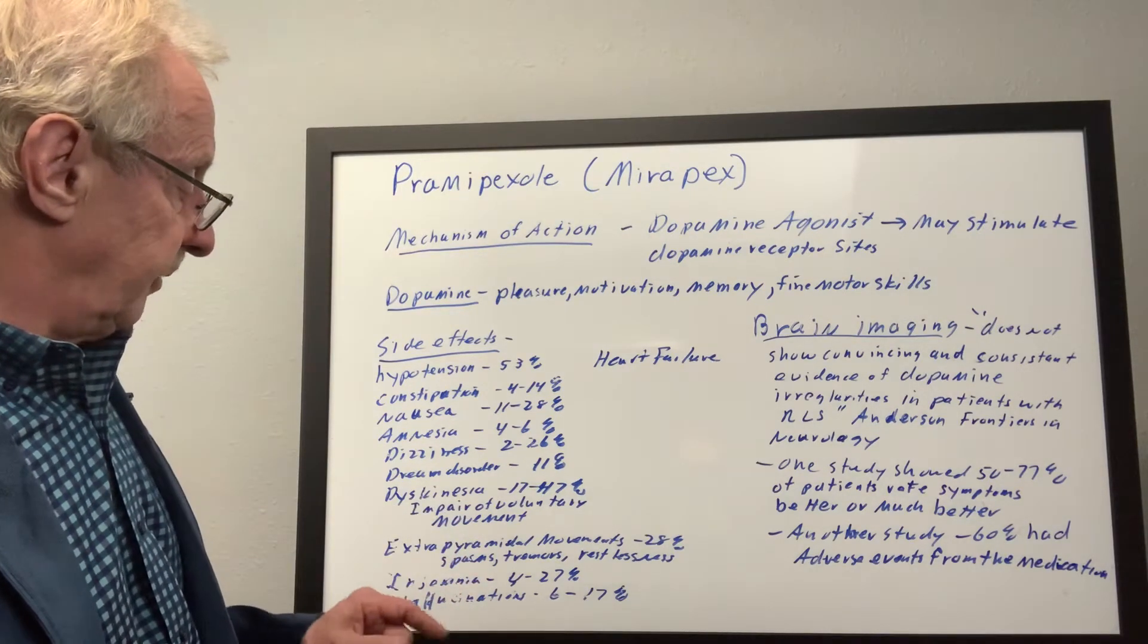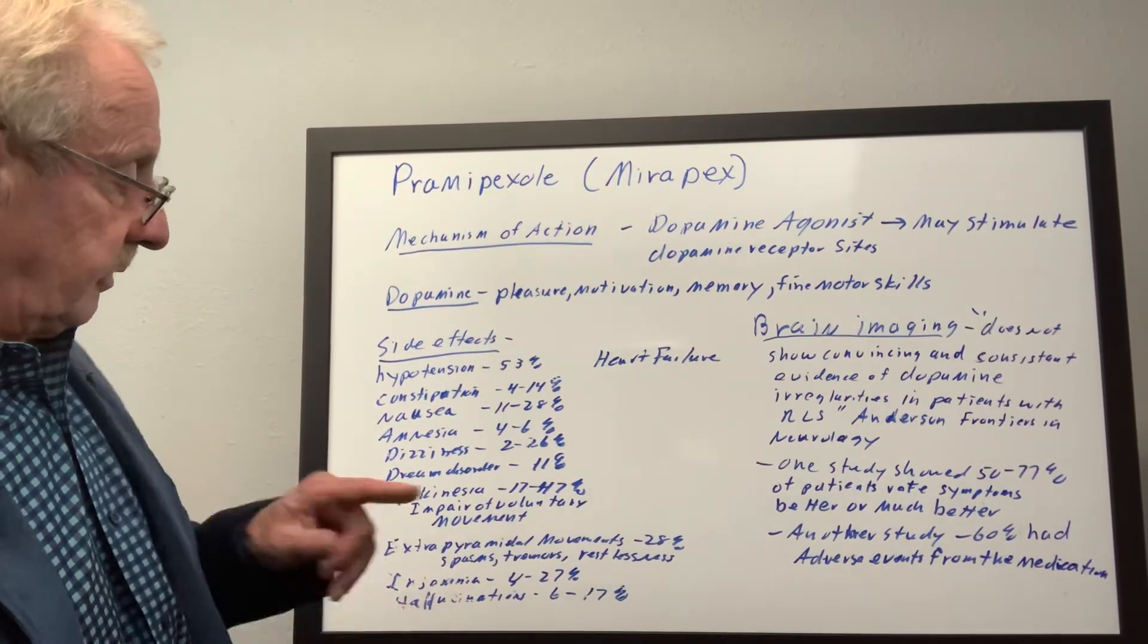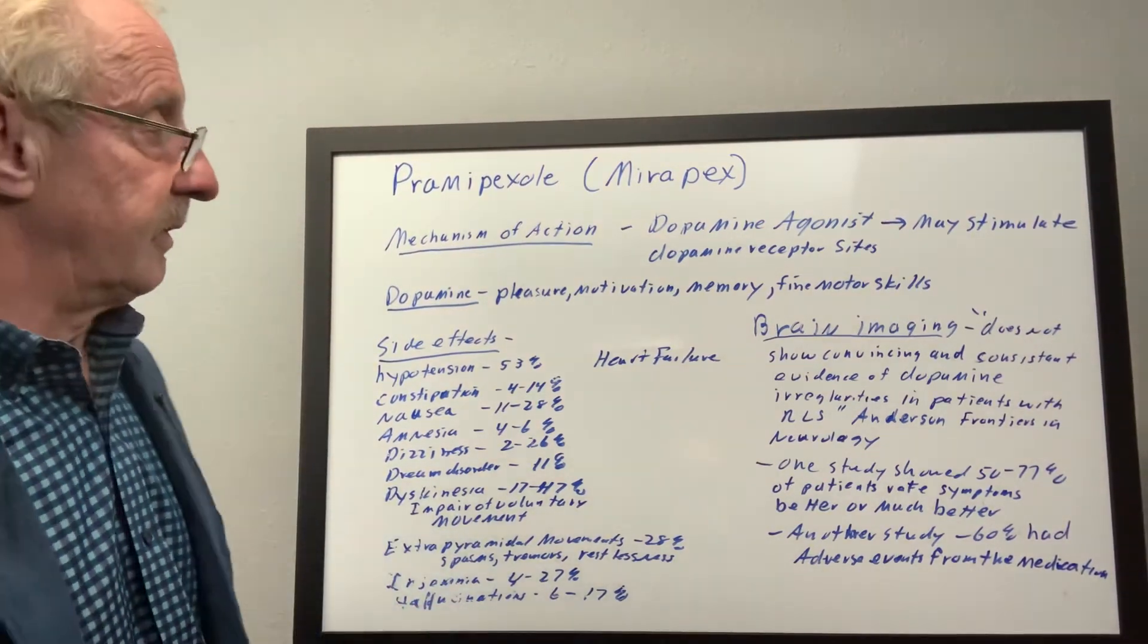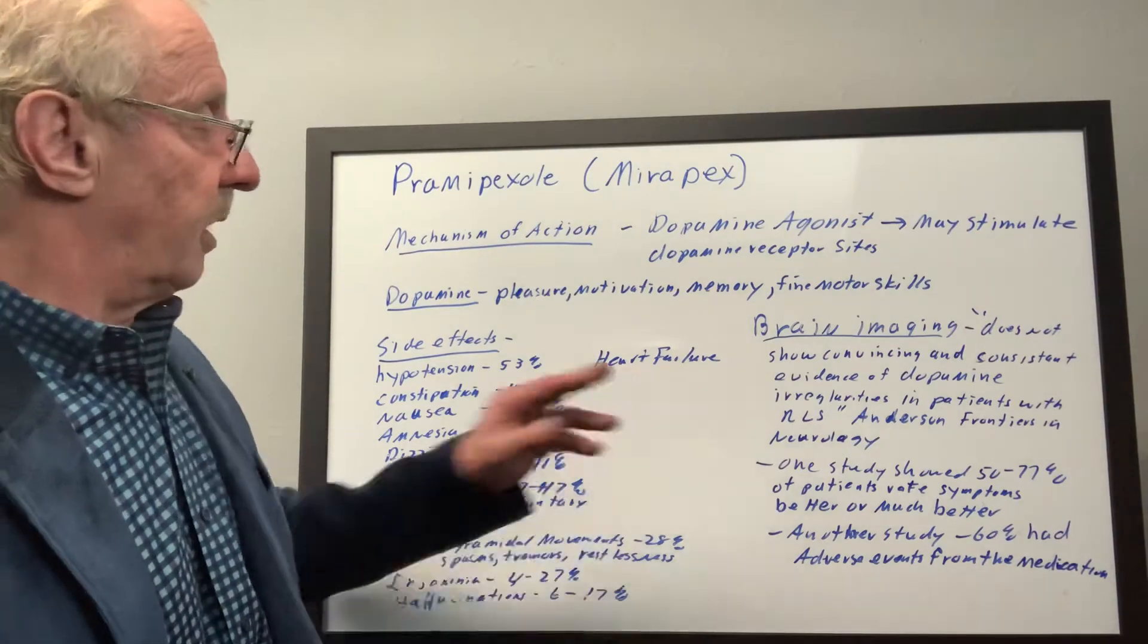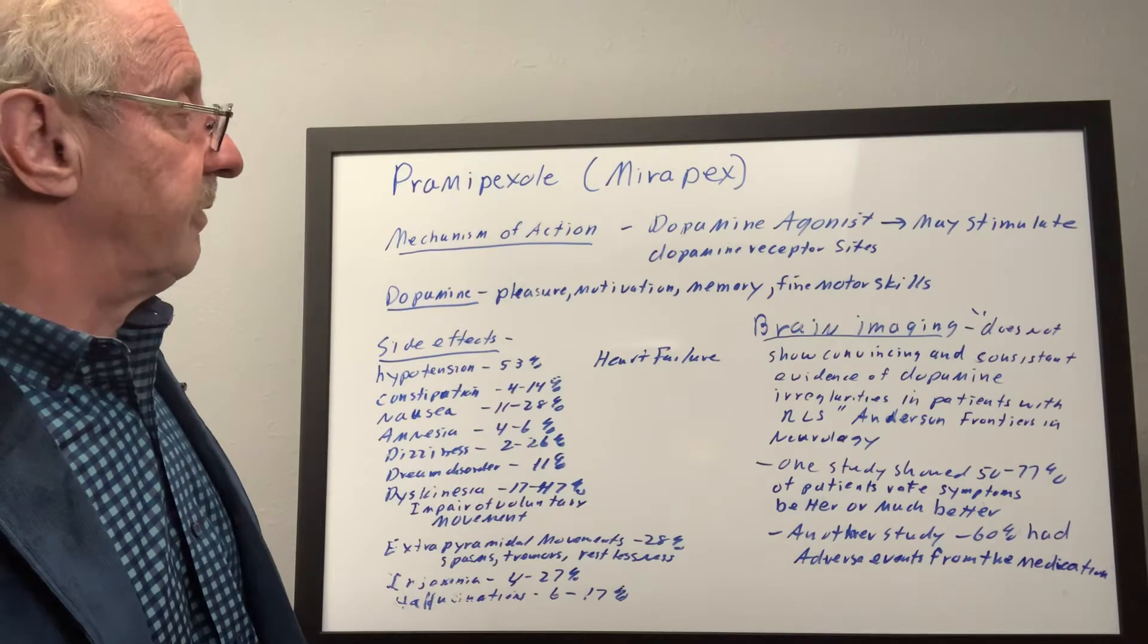Then finally, amnesia, 4% to 26%, and finally down here, kind of hard to read, but hallucinations, 6% to 17%. Also, heart failure - very rare, very serious, but very rare to have heart failure.